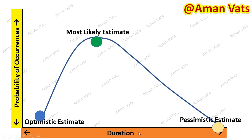On this chart, the horizontal axis represents duration and the vertical axis represents probability of occurrence. For example, this point is the optimistic estimate, this is the most likely estimate, and this is the pessimistic estimate. PERT depends on three different estimates, which is why we sometimes call it three-point analysis or three-point estimation.